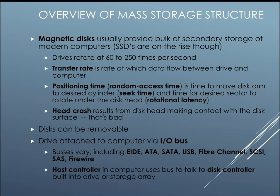When you have a magnetic disk or a hard drive, it rotates anywhere from 60 to 250 times per second. The transfer rate is the rate at which data flows between the drive and the computer. There's also a positioning time, which is the time to move the disk arm to the desired cylinder — called the seek time — and the time for the desired sector to rotate under the disk head, which is called rotational latency.